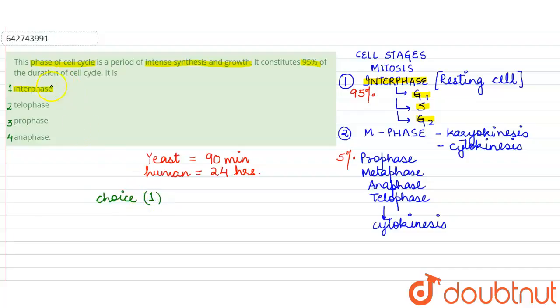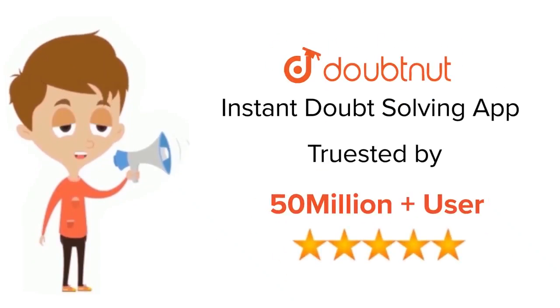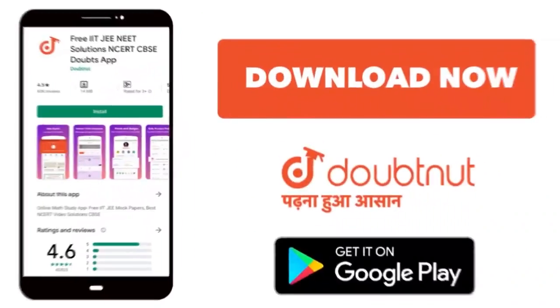So this is all for this query. Thank you. For class 6 to 12, IIT-JEE and NEET level, trusted by more than five crore students, download Doubtnet app today.